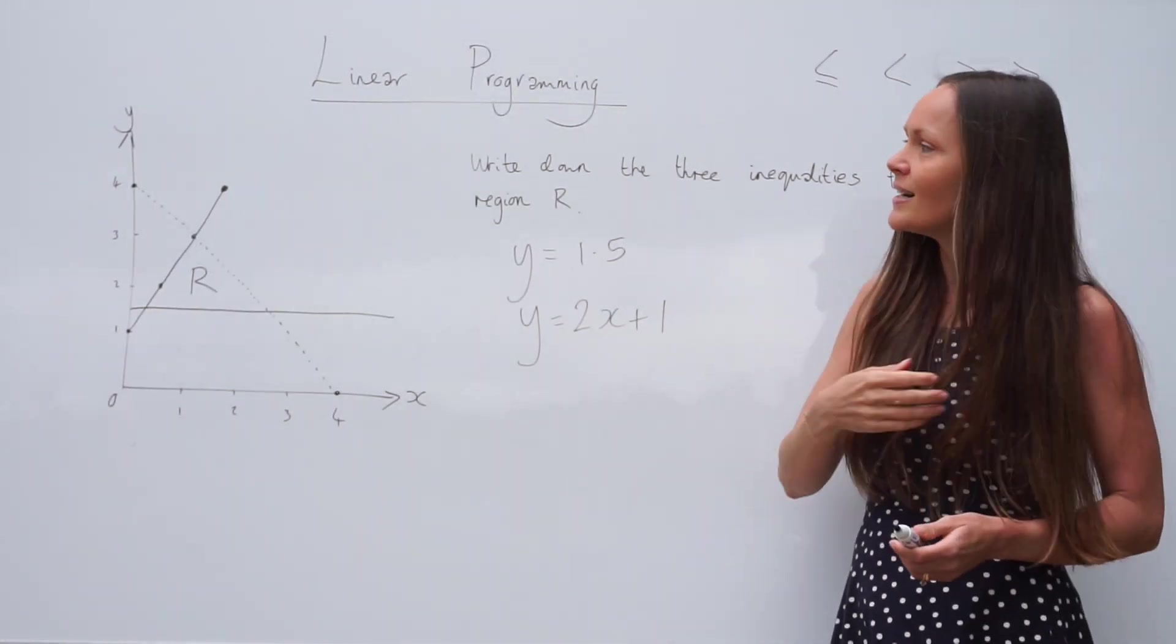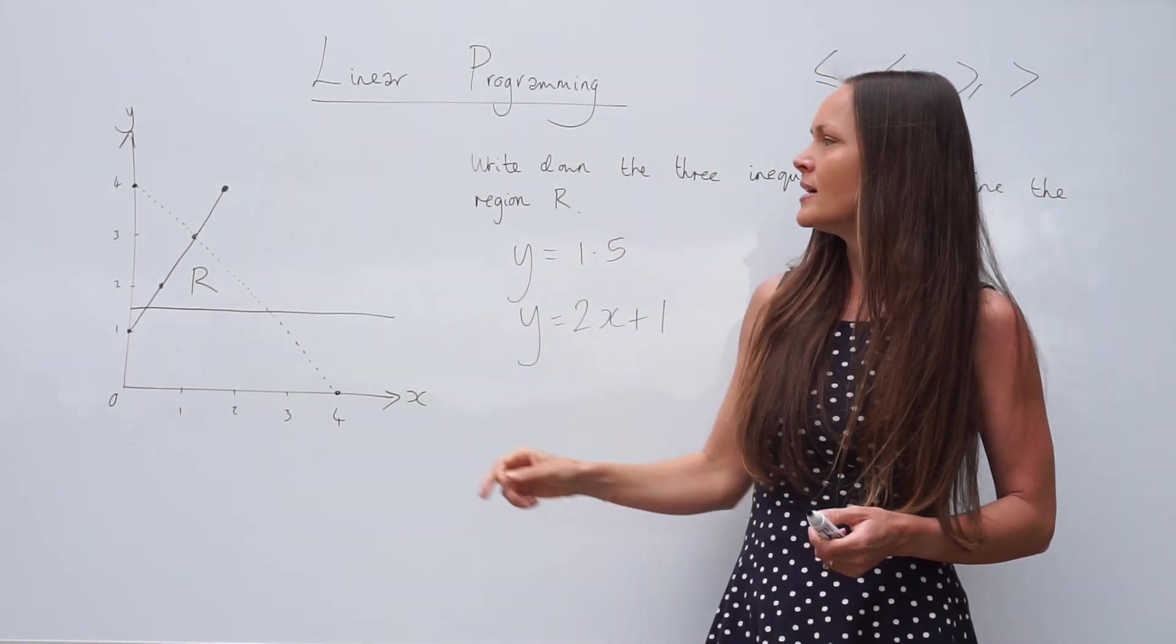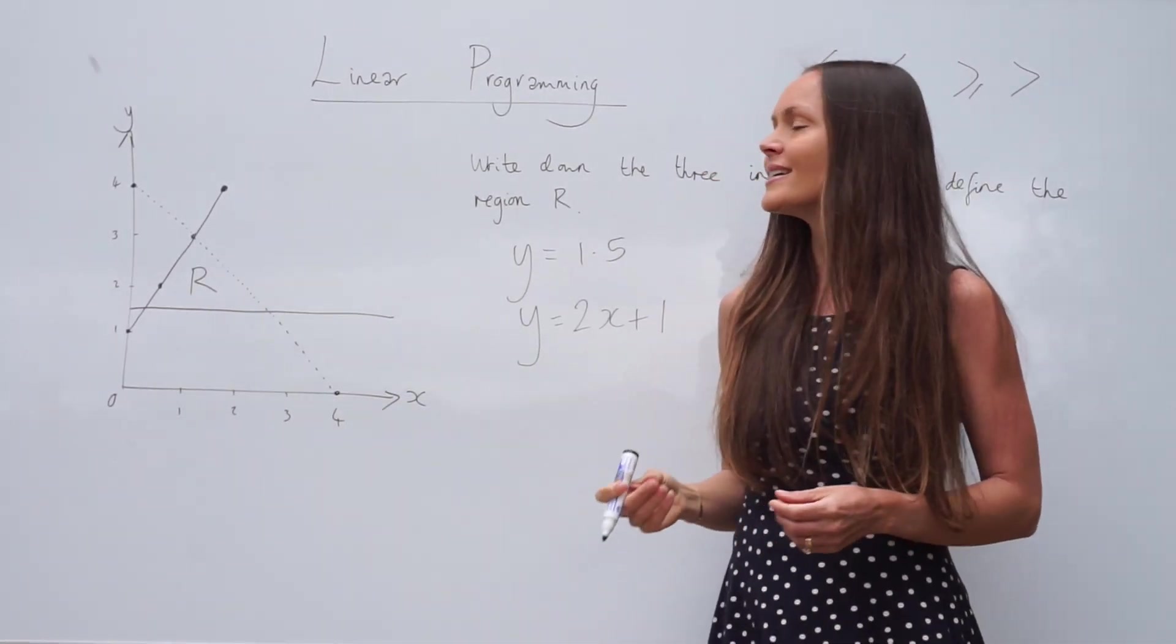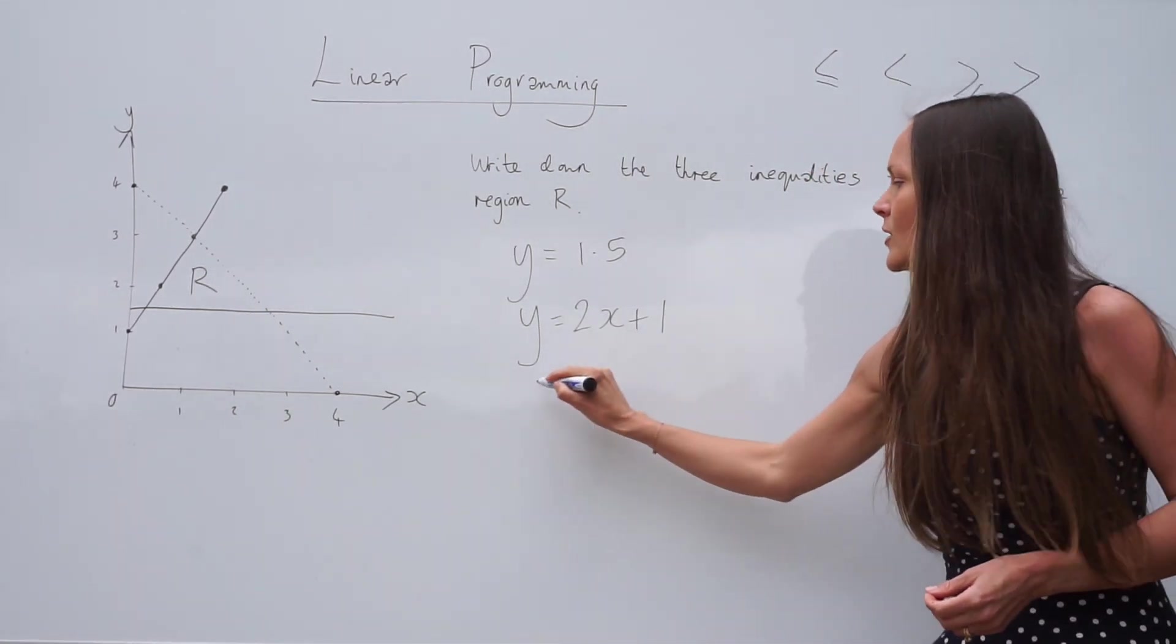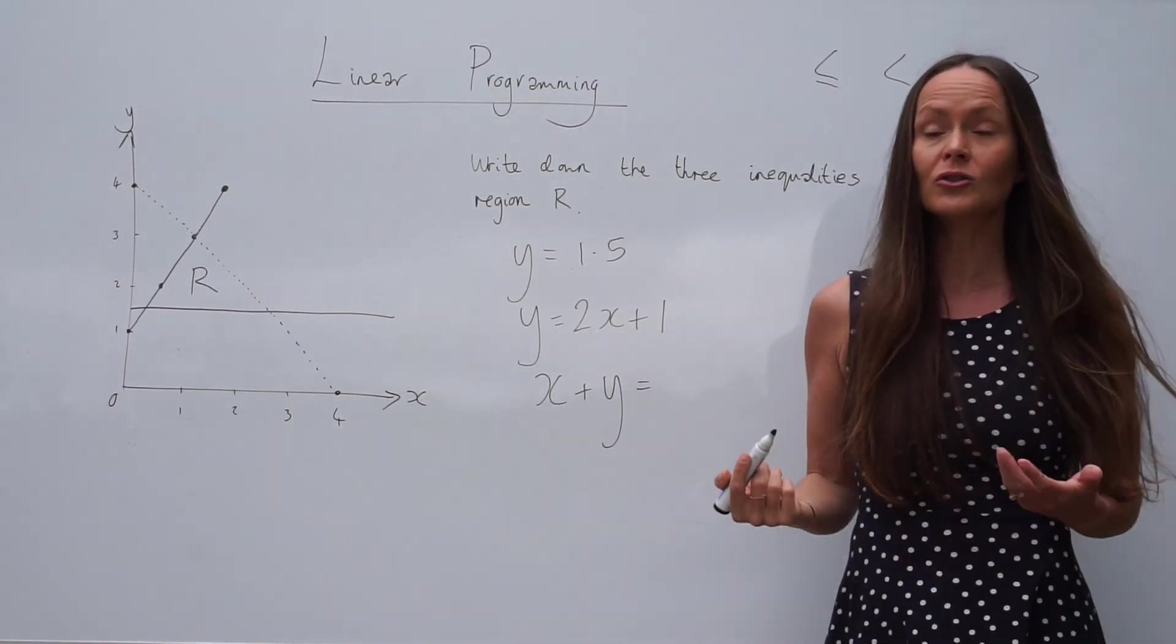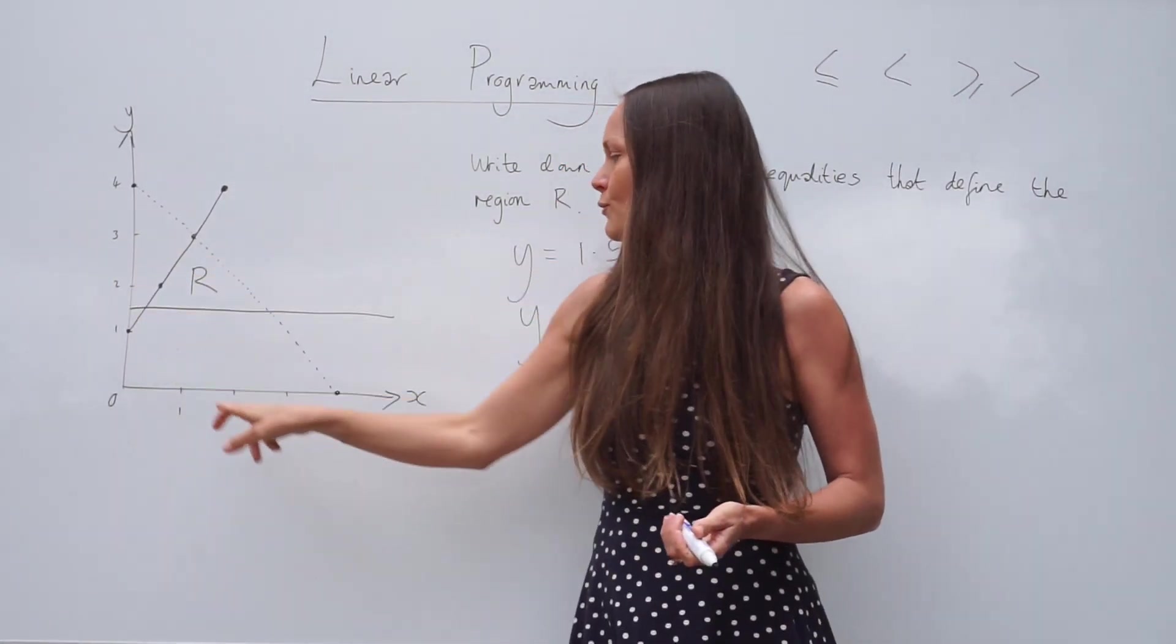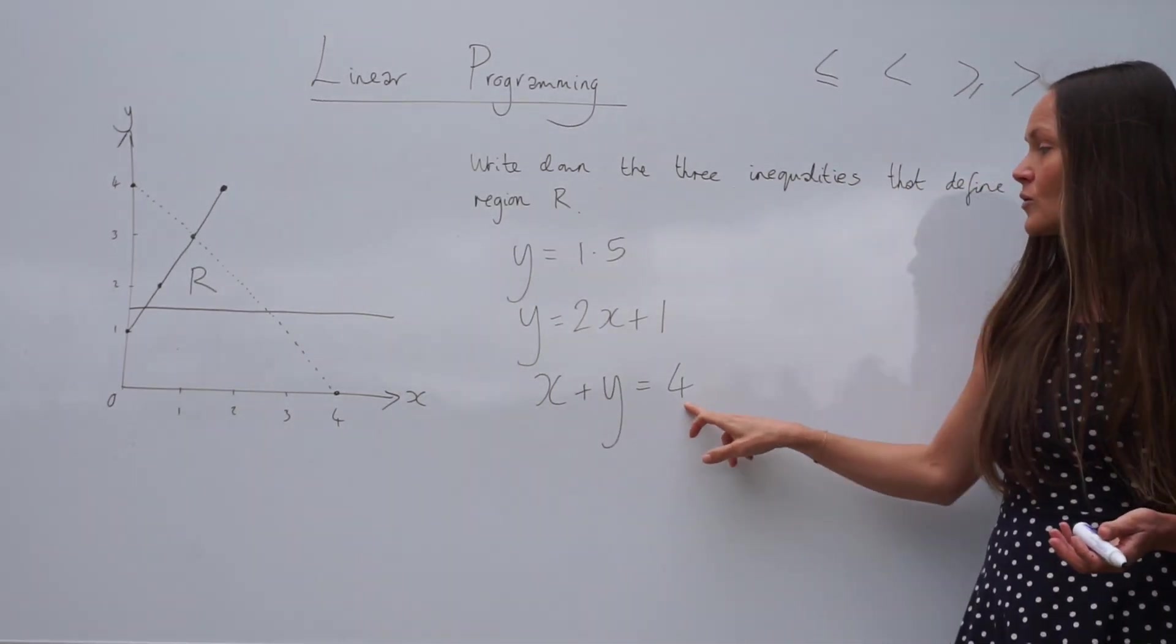Now for the final straight line here, this dashed line. Notice how it crosses the y axis and the x axis at the same number, 4. When that happens, there's a nice easy way of writing down the equation of a straight line. Write down x plus y, and then put it equal to that number. So this time, positive 4. If the line had crossed at positive 3 and positive 3, you would write down x plus y equals 3 instead.